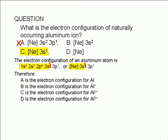Similarly, choice C is the electron configuration for an aluminum ion with a charge of plus 2. And choice D is the electron configuration of an aluminum ion with plus 3 charge.